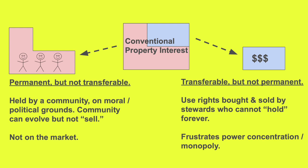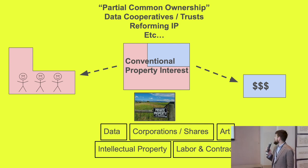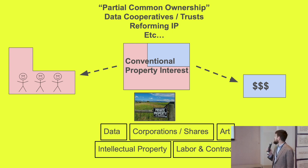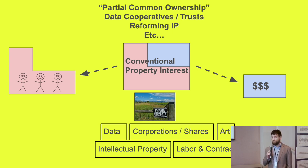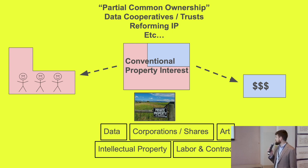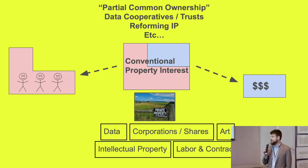This general template characterizes a lot of work I've tried to do, and also a lot of work that brilliant people in this room are doing, including the idea of partial common ownership. Also ideas about data cooperatives, trusts, how to reform the way we hold power over data, and what kinds of things we might do to improve intellectual property law. These kinds of ideas have many applications: we can think about how to do property and land better, but also think about it in the context of data, corporations, art, intellectual property, labor and contract, and much more.